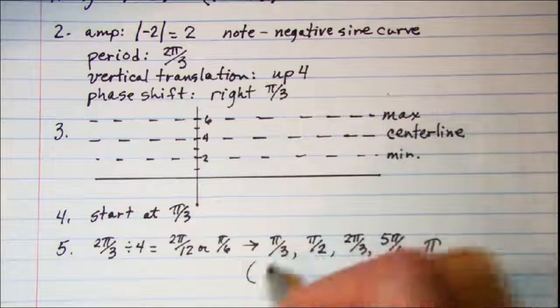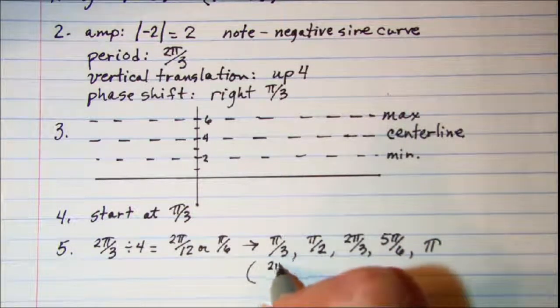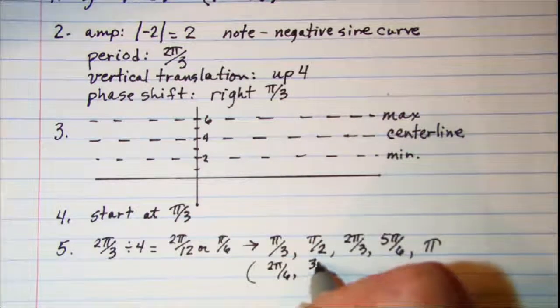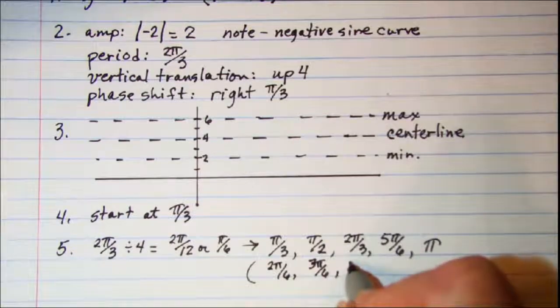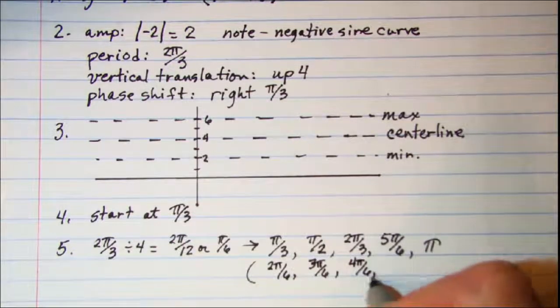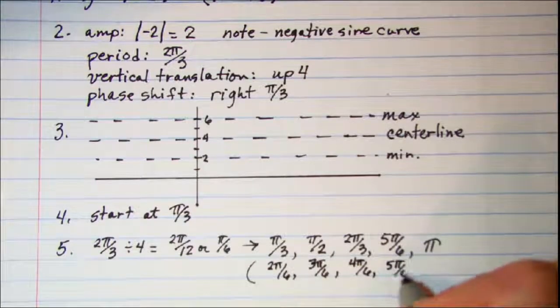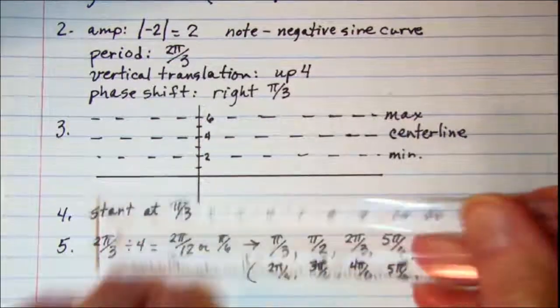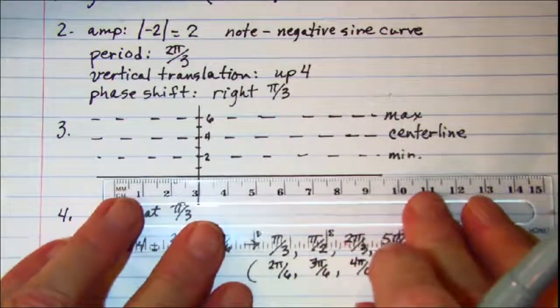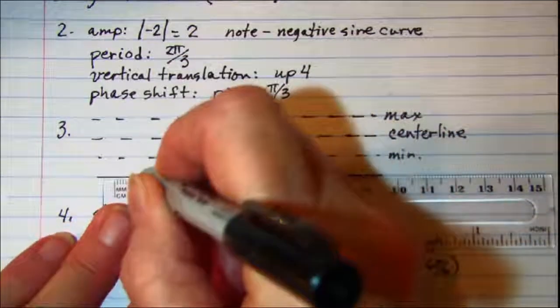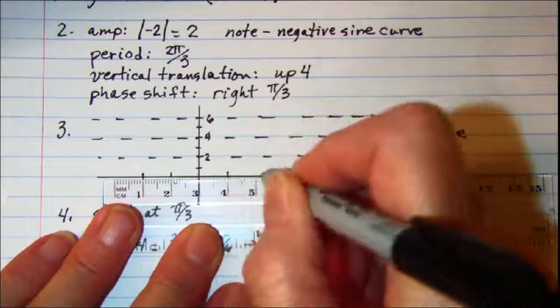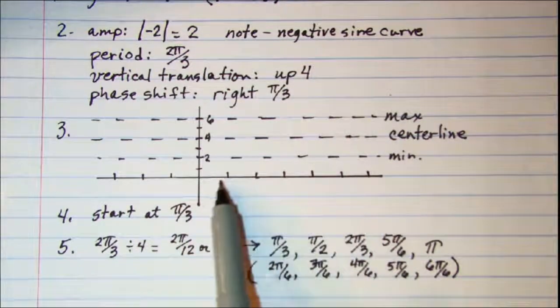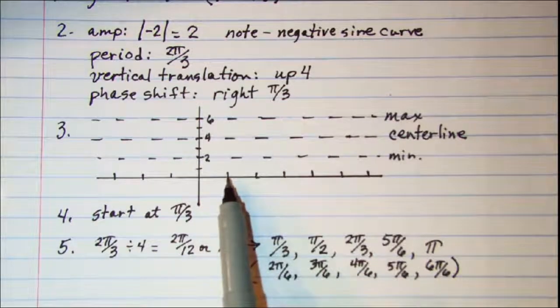So I'm going to write this as 2 pi over 6, and then this would be 3 pi over 6, and then 4 pi over 6. So each of my marks on my horizontal axis I'm going to make that pi over 6 units.